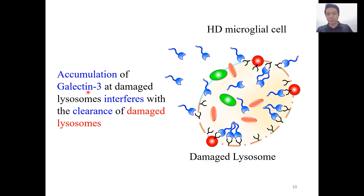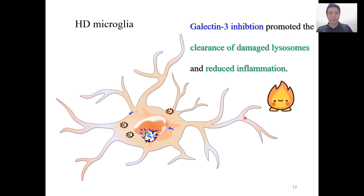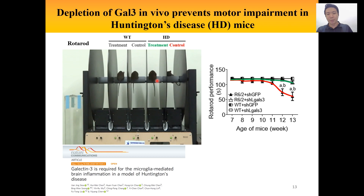Accumulations of galectin-3 at damaged lysosomes interfere with the clearance of damaged lysosomes. This will ultimately cause inflammation. Galectin-3 inhibition promoted the clearance of damaged lysosomes and reduced inflammation. In this mouse model of Huntington's disease, in the HD mice with galectin-3 inhibition treatment, it performs significantly better than the HD mice without any treatments.